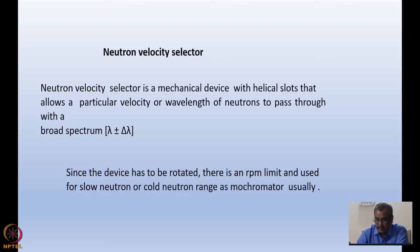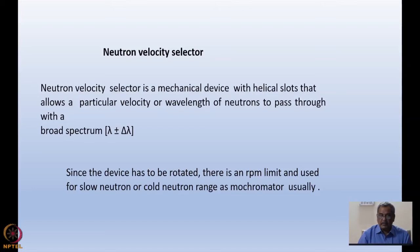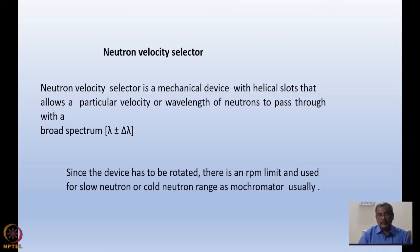The next device is the neutron velocity selector. It does not chop the beam but rather selects a wide monochromatic band from a given polychromatic beam, so it can be used as a monochromator even in a continuous source. Since we have to rotate this device, there is a limit on rotations per minute, and it is preferable when we want slow neutrons or cold neutrons - making it good for spectrometers using cold neutrons.